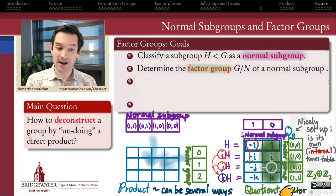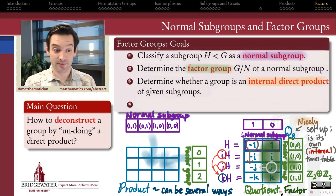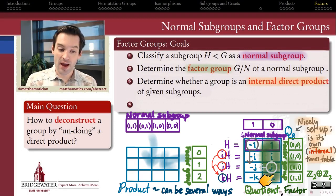How do I determine the factor group of a larger group given a normal subgroup that we're taking the cosets of?